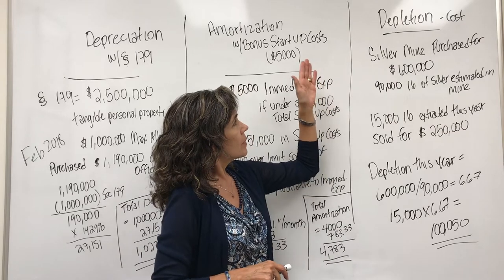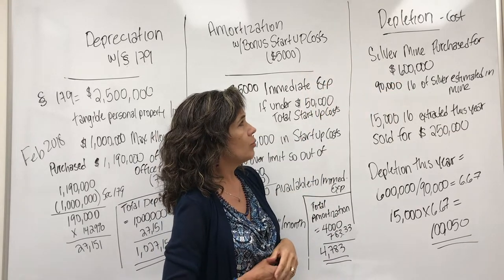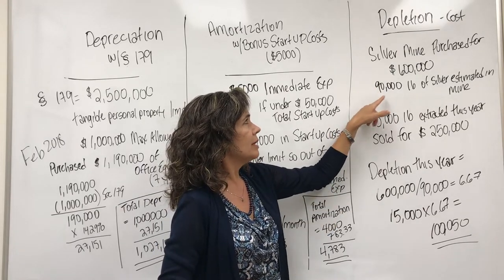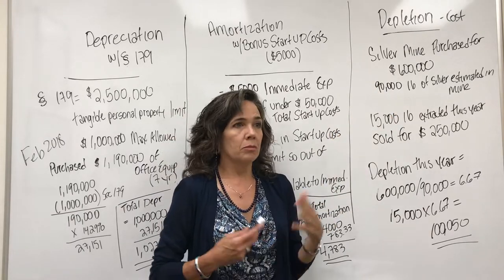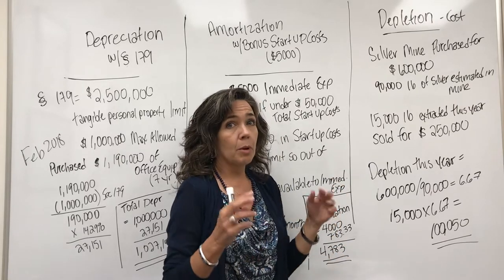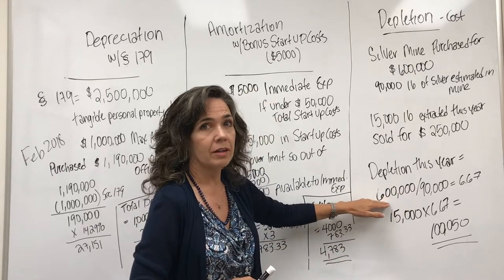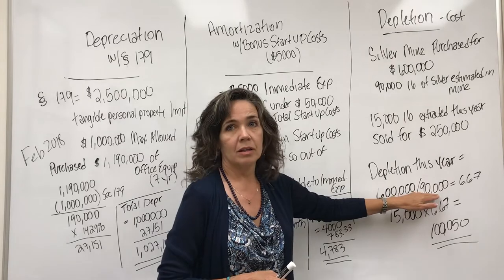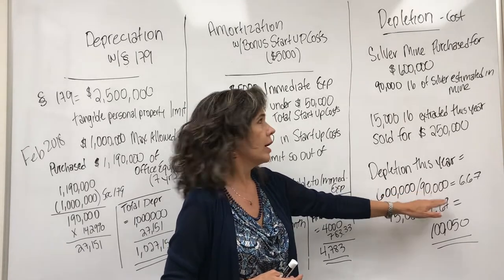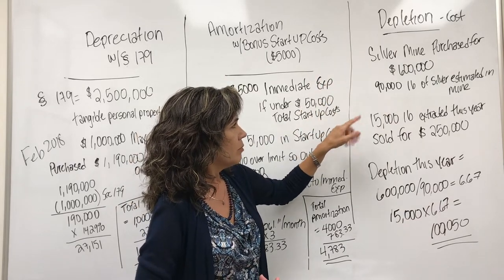Let's say I had a silver mine that I purchased for $600,000. When I purchased that silver mine, I estimated that I would pull out about 90,000 pounds of silver. So when you buy the investment, this is how you come up with the cost of what you're going to deplete — you need to know what you paid for the asset and how much you estimated you would pull out of there.